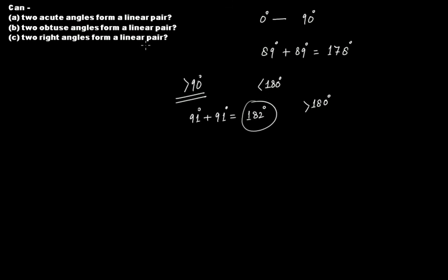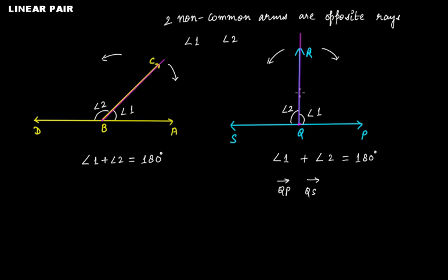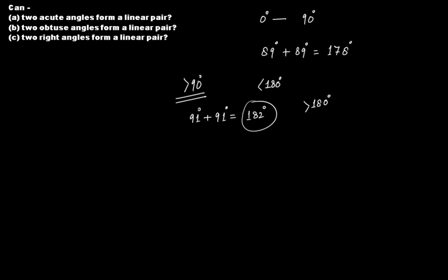Can two right angles form a linear pair? Of course — yes. If we take both angles as 90 degrees, two right angles are adjacent and their sum equals 180 degrees. Therefore, two right angles do form a linear pair.